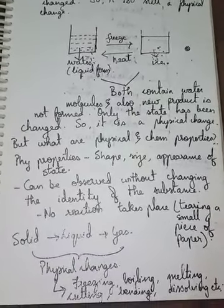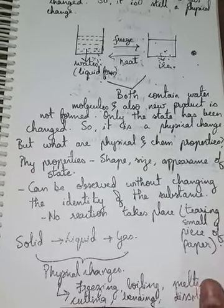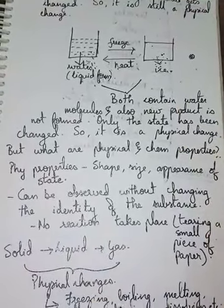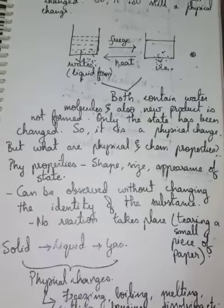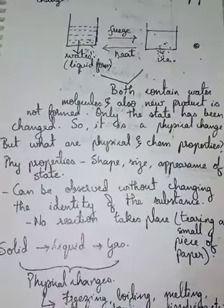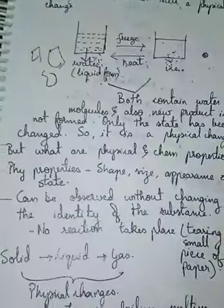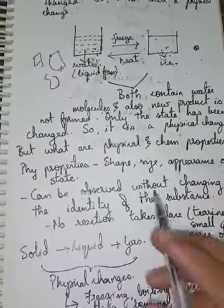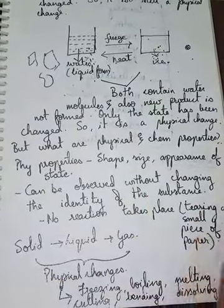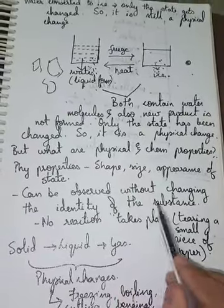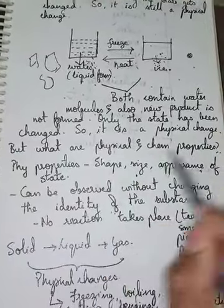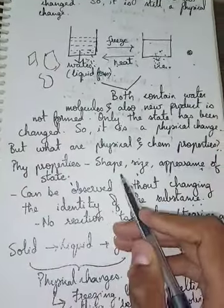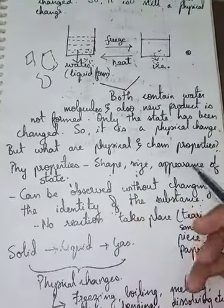But what are physical and chemical properties? Physical properties are shape, size, and appearance of state — that means without changing the composition of a substance, you can observe them. If you can just look and tell what is its shape, size, or what state it appears in — solid, liquid, gas, or aqueous — those are physical properties. They can be observed without changing the identity of the substance, and they are visible to your eye.